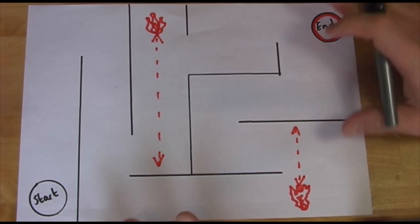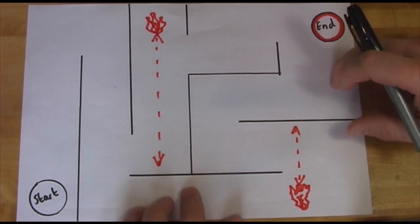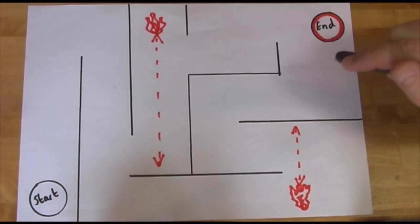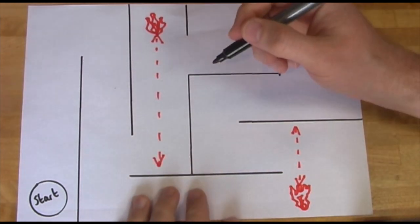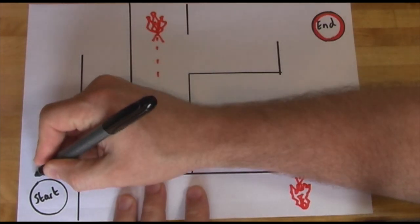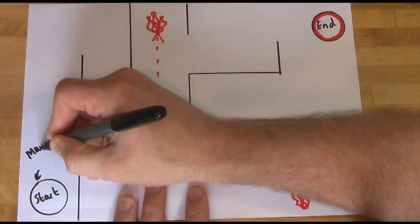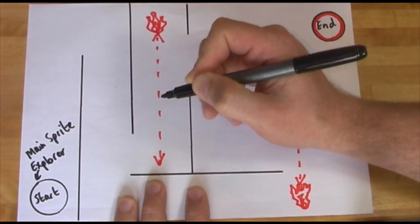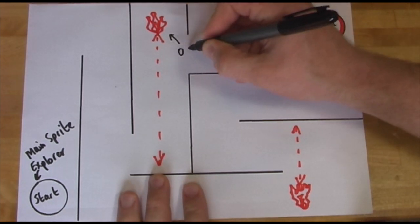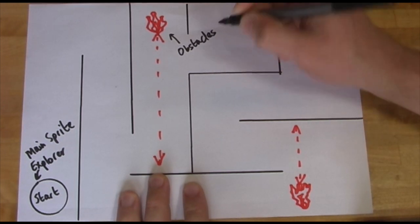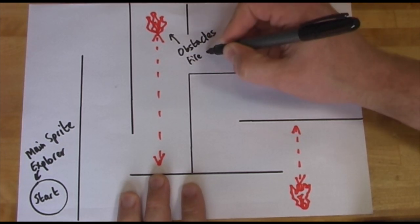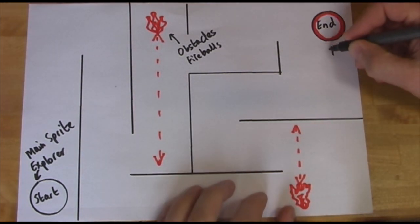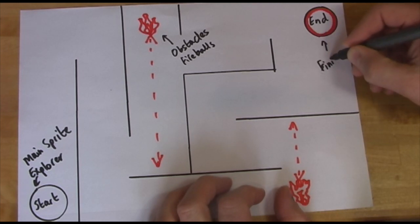This is really helping me — it gives me a clear idea of what I'm going to do when I get to my computer and start designing my character, my obstacles, and my maze. I'm going to write a few notes on here to help me when I come to design it. I'll note that this is my main sprite and he's going to be an explorer. These are my obstacles — fireballs. And I'll annotate the top as the finish point.